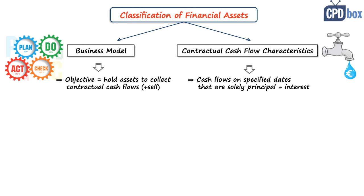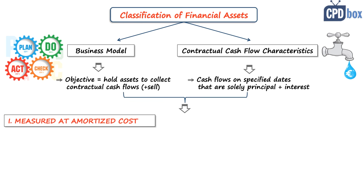Based on these two tests, IFRS 9 classifies financial assets into three basic categories. The first is measured at amortized cost — an asset falls into this category when it is held within a business model with the objective to collect contractual cash flows, and the contractual cash flow characteristic test is also met. We are basically talking about debt securities and loans here.